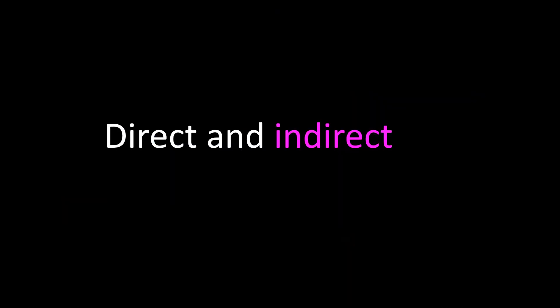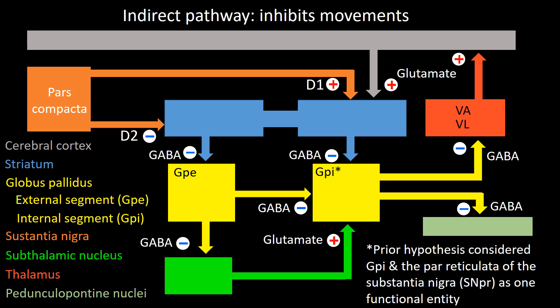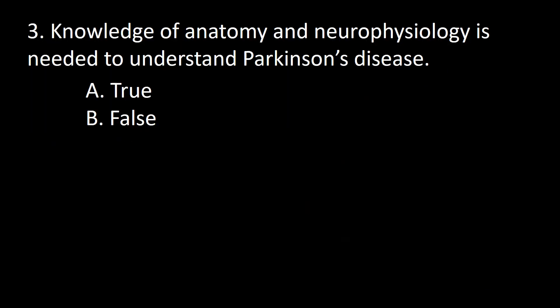The indirect pathway inhibits movements. It goes from the pars compacta through the external segment of the globus pallidus to the subthalamic nucleus, from the subthalamic nucleus to the internal segment of the globus pallidus, and from there via the thalamus to the cortex. So the answer to this question is A.